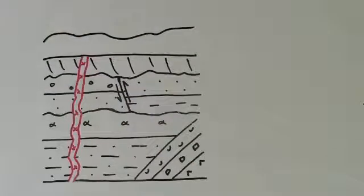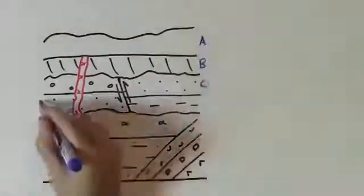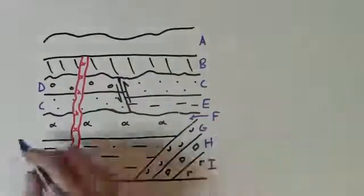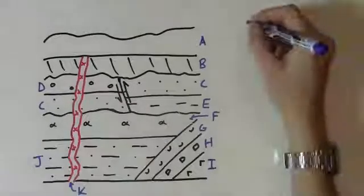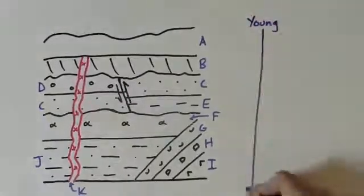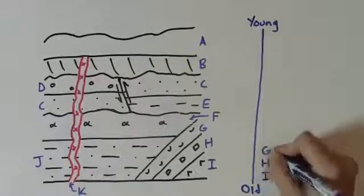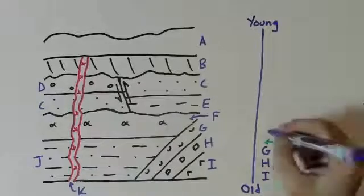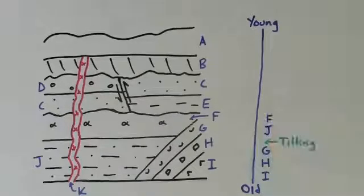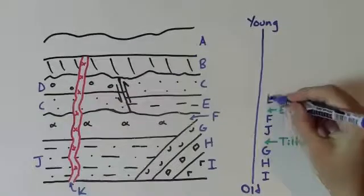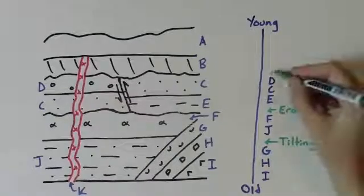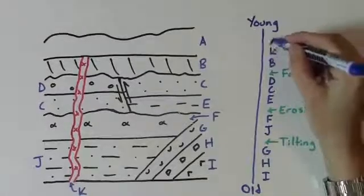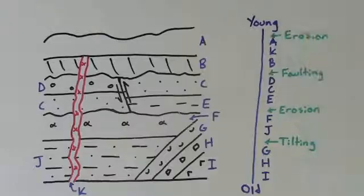Now, we'll label each layer and put them in order, along with the deformational events that are important in the history of this area. We'll start with the oldest and go to the youngest. First, we had I, H, and G deposited, followed by a tilting event. Then, J and F were deposited, followed by erosion. E, C, and D were deposited and faulted, then eroded, followed by the deposition of B, the intrusion of K, and the deposition of A, and more erosion.